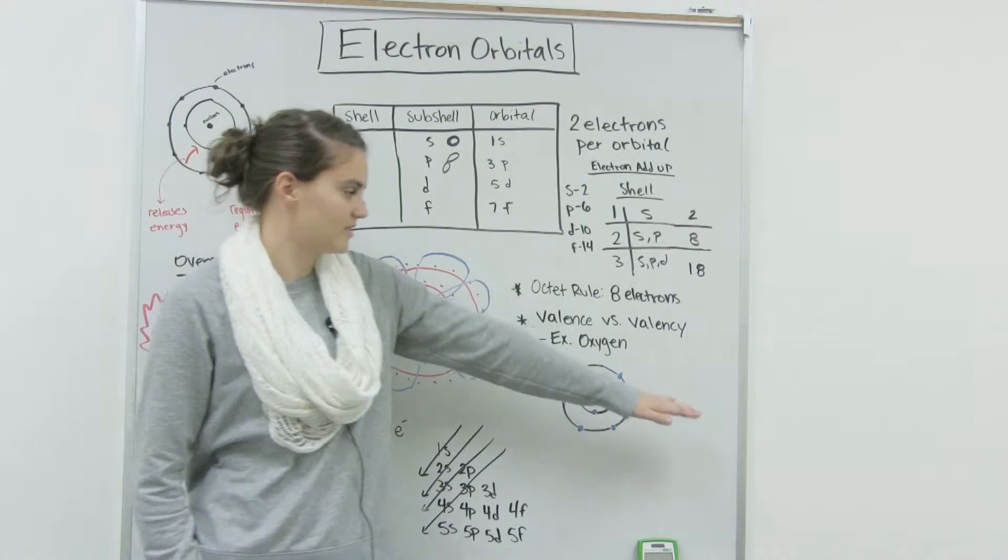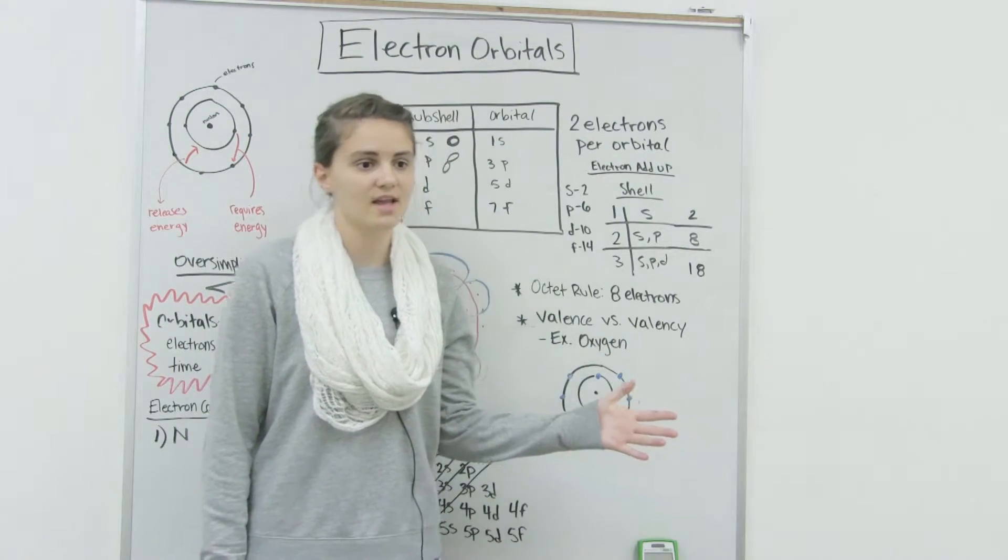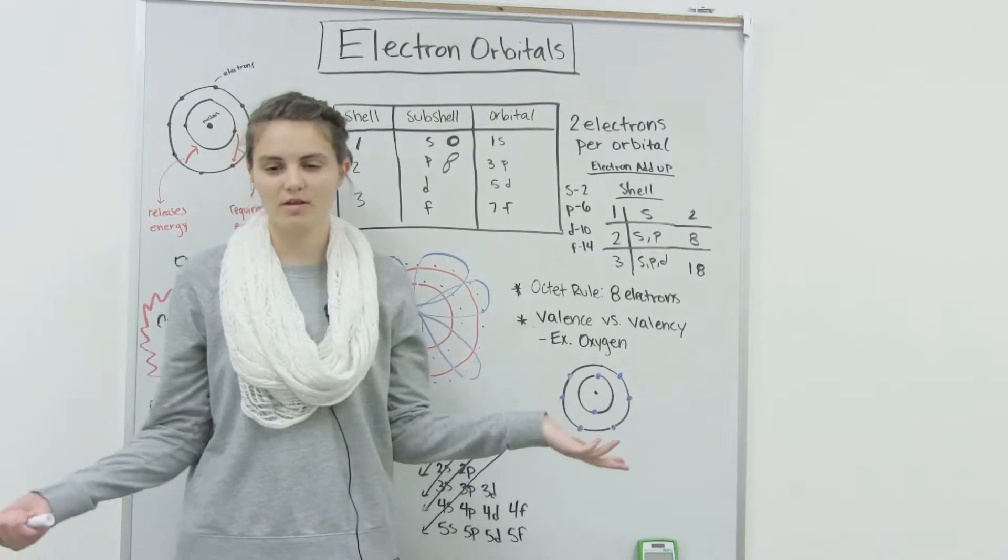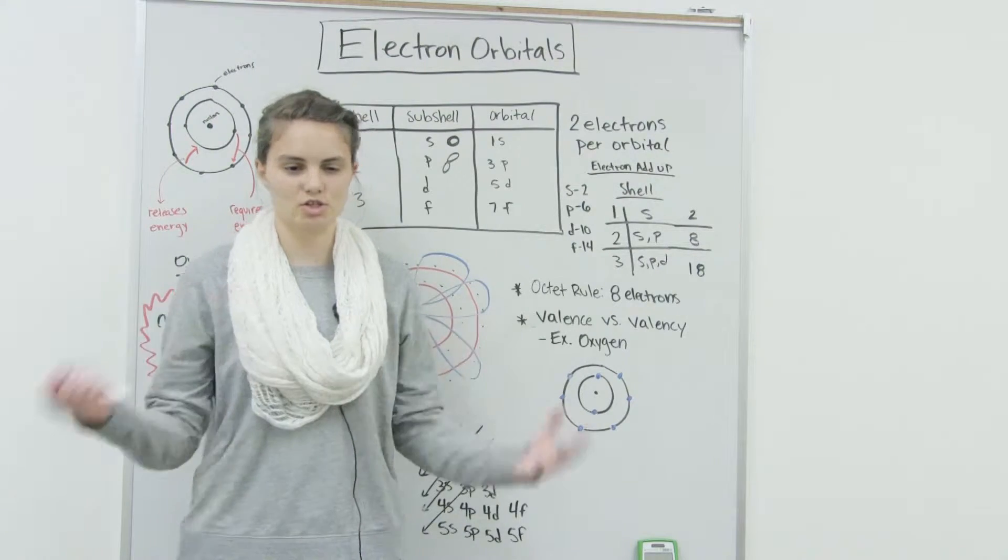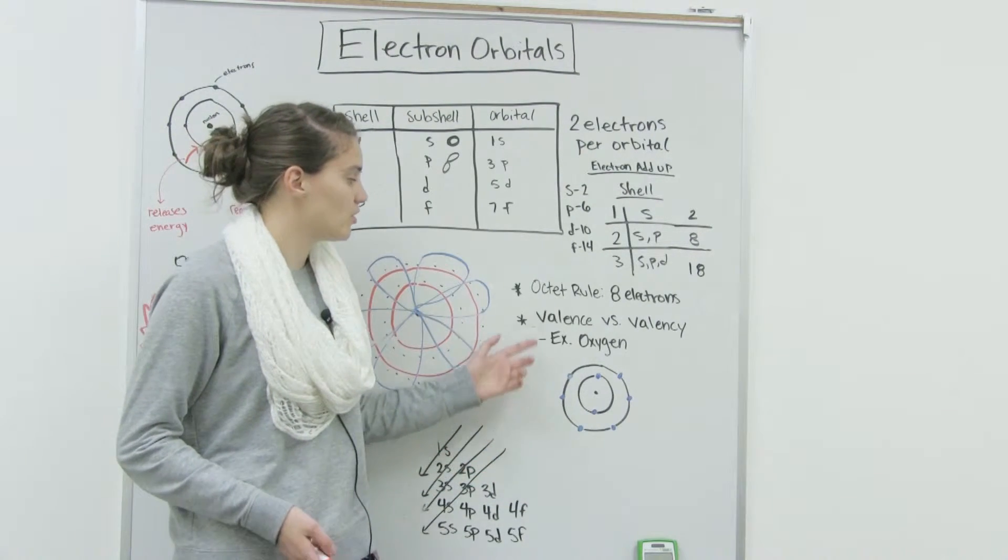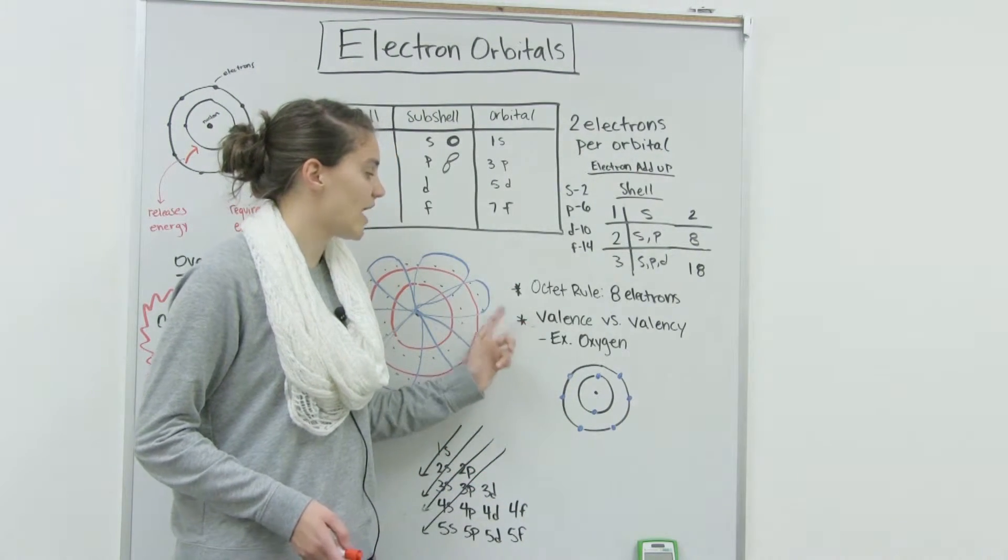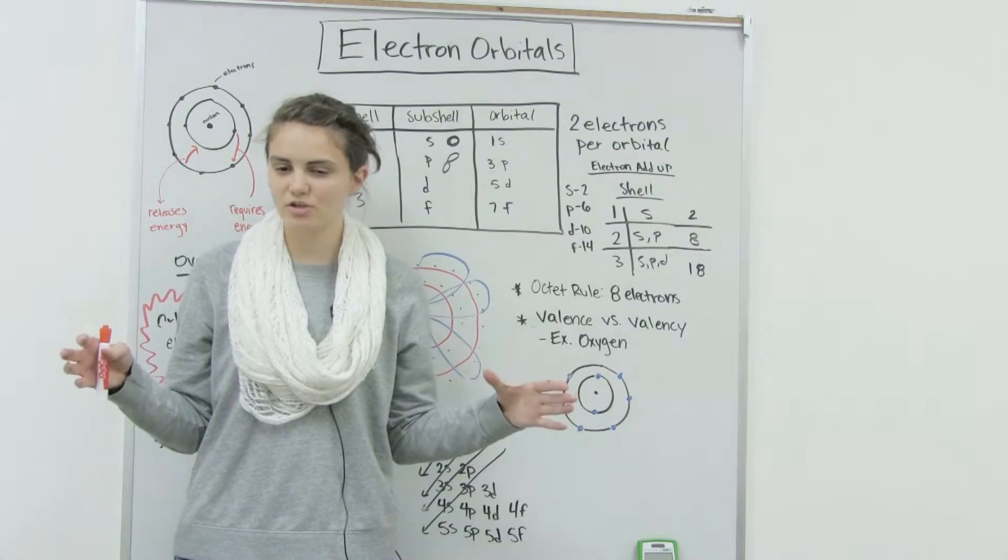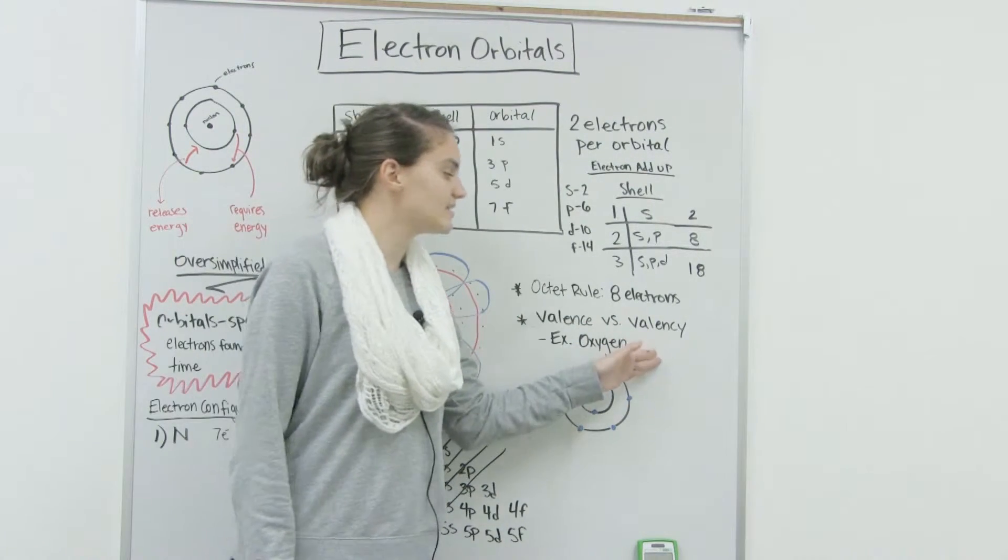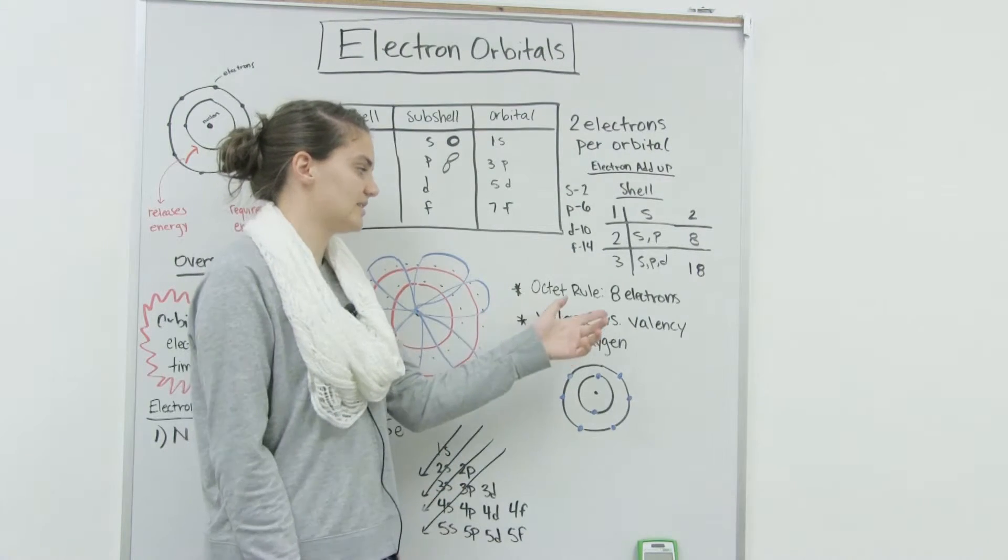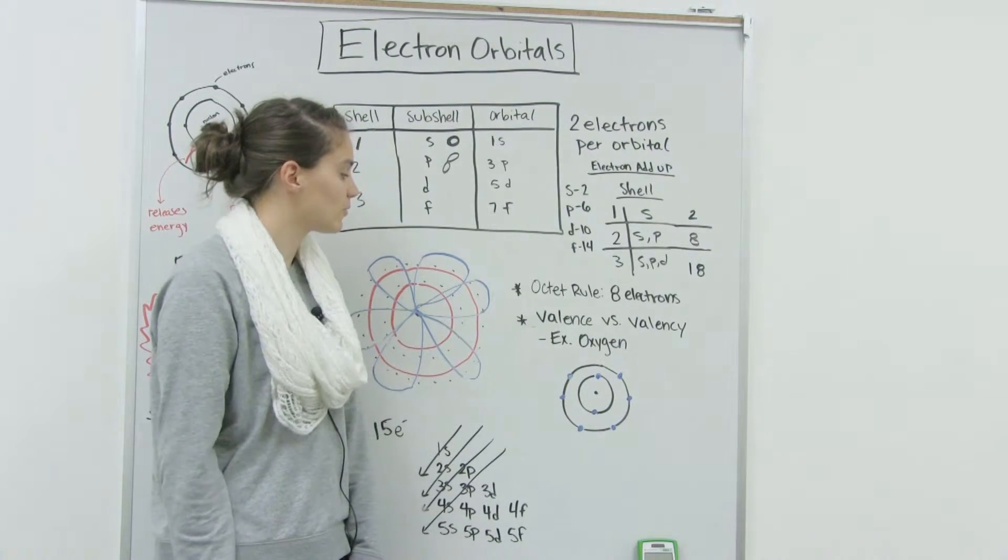Valence versus valency. So I said earlier that the outer shell can also be called the valence shell. And so valence describes the number of electrons in that outer shell or valence shell. And valency describes the number of electrons that need to be added to satisfy the octet rule.